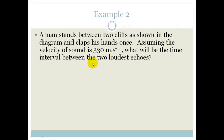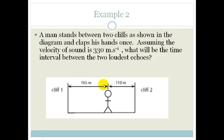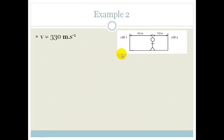Let's look at another example. A man stands between two cliffs, as shown in the diagram, and claps his hands once. Assuming the velocity of sound is 330 meters per second, what will be the time interval between the two loudest echoes? So, let's think about what we've got here. We want to know how long it takes for the sound to get there and back. They've told us that V equals 330 meters per second. We're going to be using the equation that speed equals distance divided by time. But we're going to rearrange it and we're going to say time equals distance divided by speed.